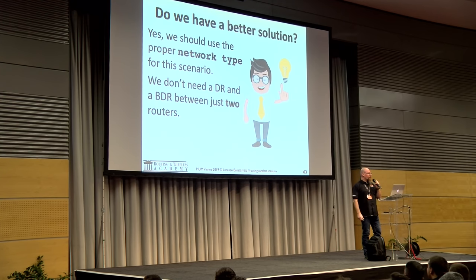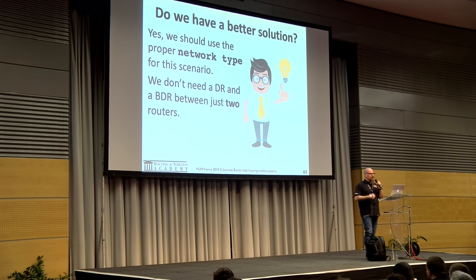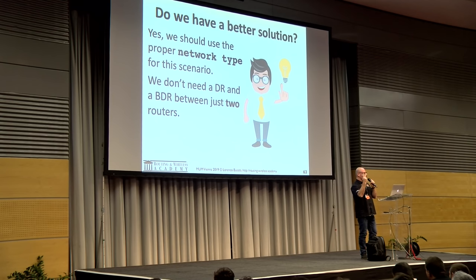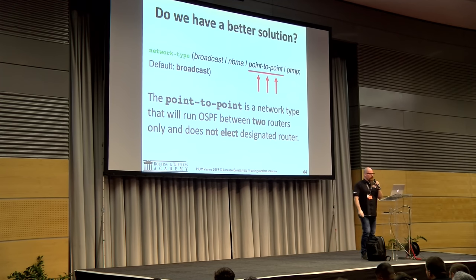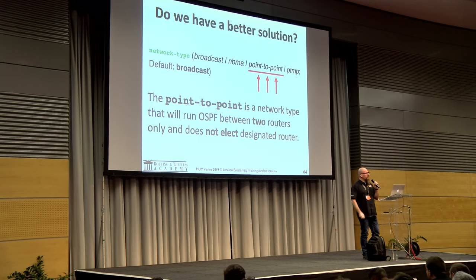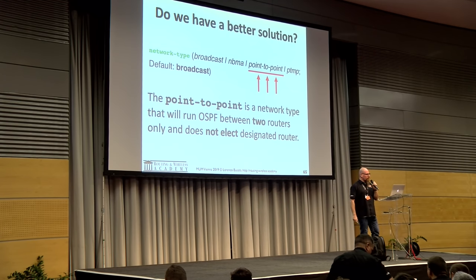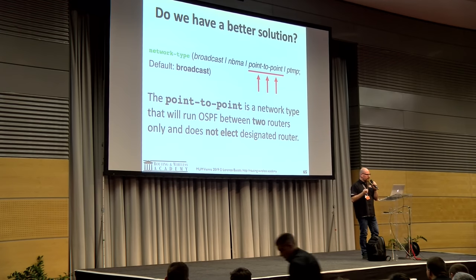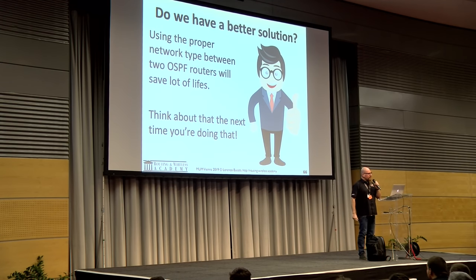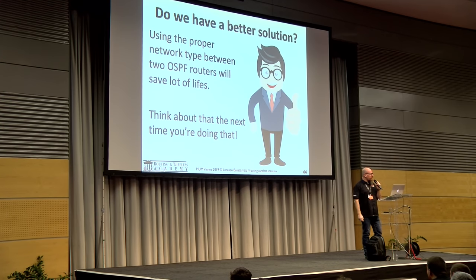Choose point-to-point. The point-to-point network type runs OSPF between two routers only and does not elect a Designated Router. This is why it works. Next time you configure an OSPF network, think about the network type on the interface.